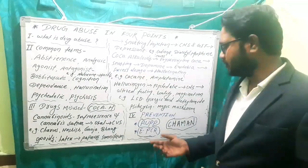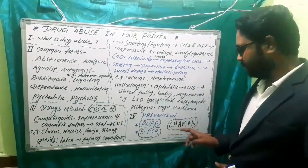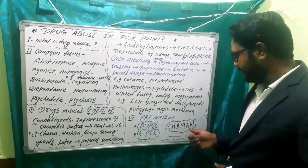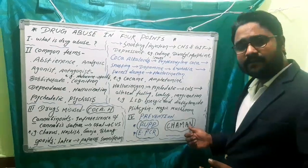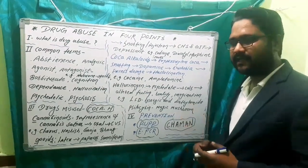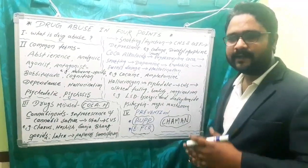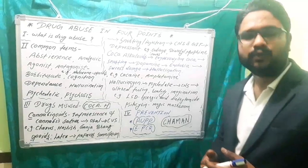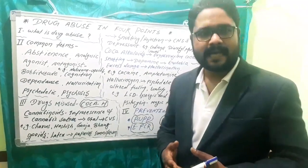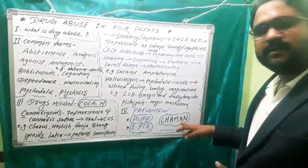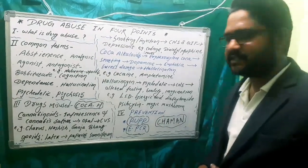The commonly misused drugs can be remembered by the shortcut CHAMAN: C for Cocaine, H for Heroin, A for Alcohol, M for Marijuana, A for Anabolic steroids, and N for Nicotine. Anabolic steroids are chemicals that mimic the male sex hormone testosterone, used by bodybuilders, wrestlers, and gym-goers for muscle growth. These are the common drugs being misused.